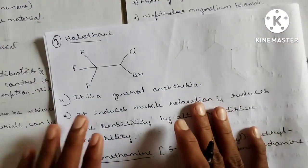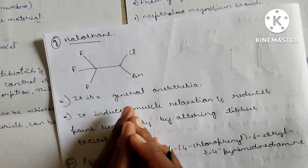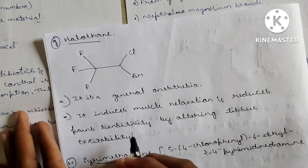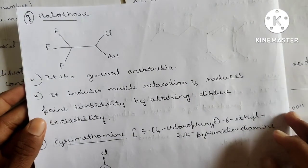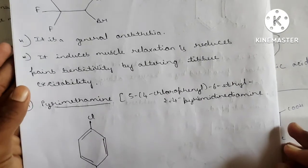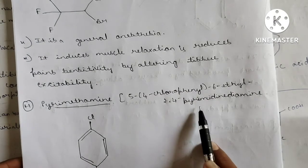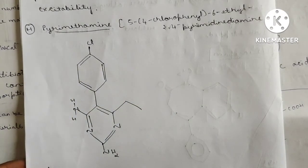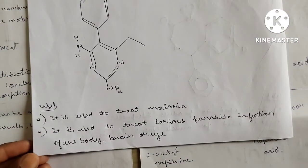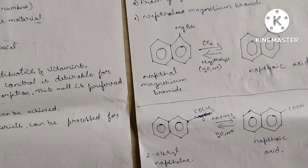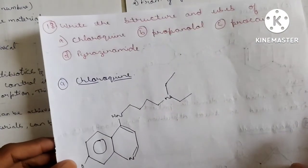In this one question many structures are combined. Halothane is a general anesthetic agent. Pyrimethamine: Practice the structure — if you practice two or three times you will know it. It is used to treat malaria and serious parasitic infections of the body, brain, or eye.